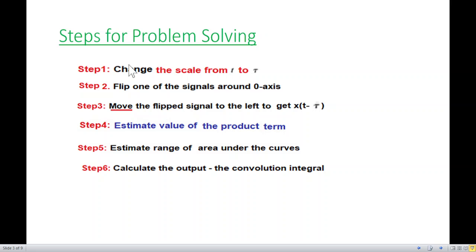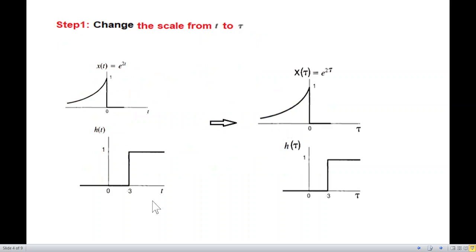Now I follow a couple of steps. This is primarily written for the finite signals, but equally applicable to infinite signals. Now this signal is infinite signal because this limit is going to infinity. This is also going to infinity. So the first step is to change the scale from t to tau. And this is actually done because subsequently we'll be using t as a variable. Therefore, we want to change this variable t to tau. So wherever there is t we write tau.